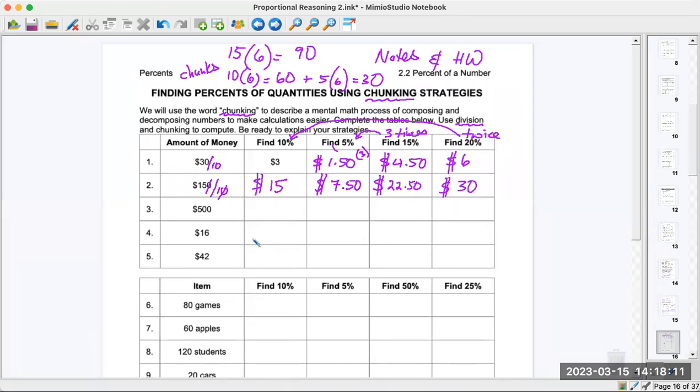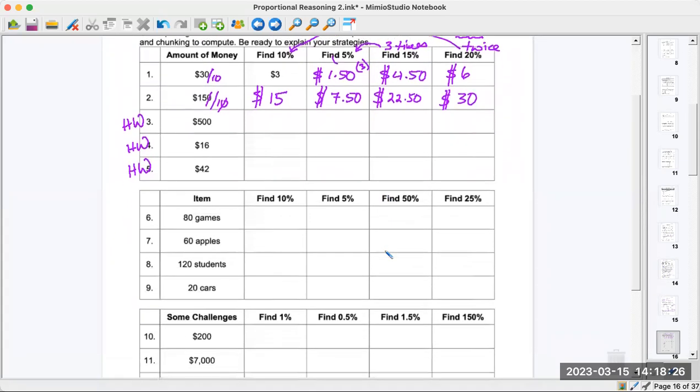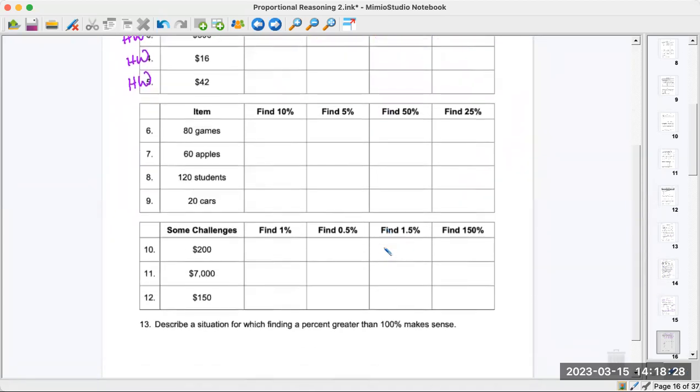So I want you to finish these for homework. I'm going down here. I'll get you started. This one I didn't prepare, so I'm going to try to do that real quick. 80 games. So it's not money. 10% is eight games because I'm dividing by 10. Cancel common zeros. Eight divided by one is eight.